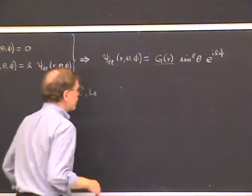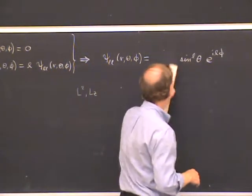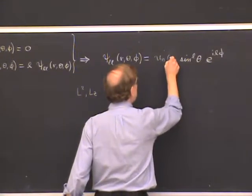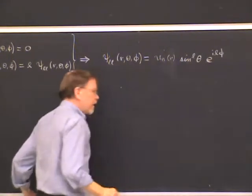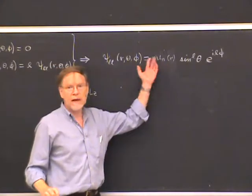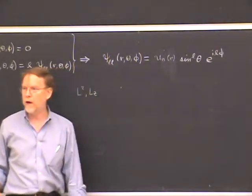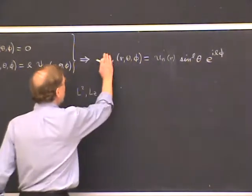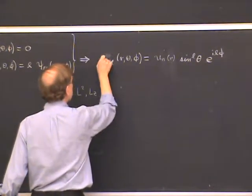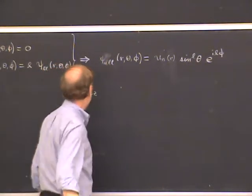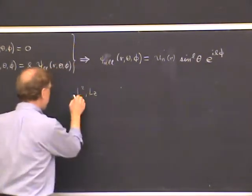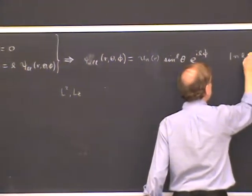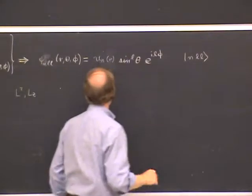One way to do that is to take the radial wave function G(r) and replace it by U_n(r), where U_n(r) is an orthonormal basis of radial wave functions. If we do this, we now have the wave function psi with three indices: n, L, L. This gives us a state which we can write in Dirac notation as |n, L, L⟩ with three quantum numbers.